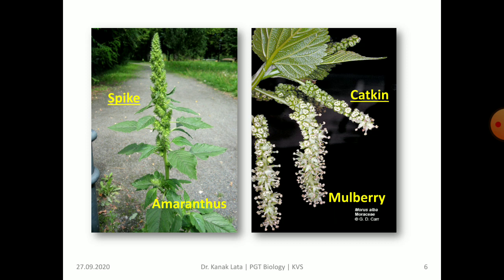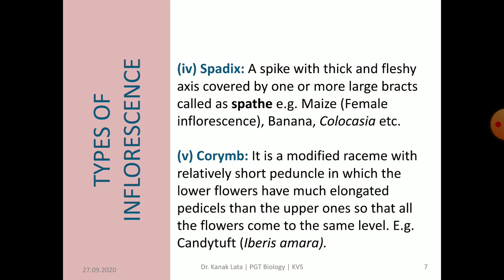The next simple racemose inflorescence is spadix. It is a spike with a thick and fleshy axis which is covered by one or more large bracts called a spathe. For example, it is seen in maize female inflorescence, banana and Colocasia.